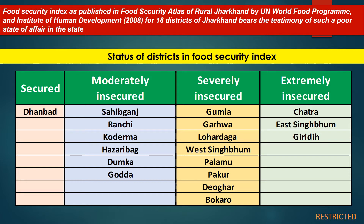Here we have described the status of districts in the Food Security Index, which refers to the availability of food grains in a quality manner to provide to the population. As per reports of the United Nations Food Program and Institute of Human Development, there are 18 districts of Jharkhand bearing testimony of poor state affairs. Jharkhand has a very poor food security index. The state has been categorized into four categories. The first is 'Secured', where sufficient food grains are available to feed the population with quality up to the mark. Only Dhanbad district falls in this category.